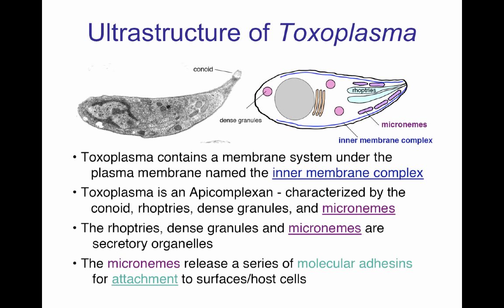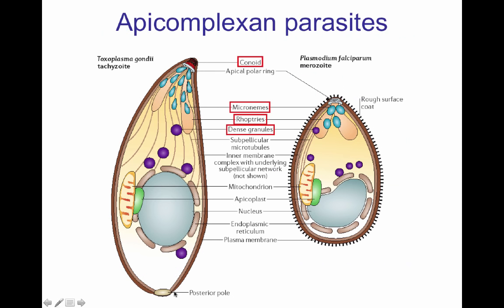Apicomplexan parasites include also the parasite causing malaria, Plasmodium falciparum. Both have a conoid. The micronemes are shown in blue, the rhoptries as bat-like structures in cream color, and the dense granules in purple. Being a eukaryote, Toxoplasma has a nucleus and mitochondria. The micronemes are going to secrete adhesins that are required for attachment to the host cell.